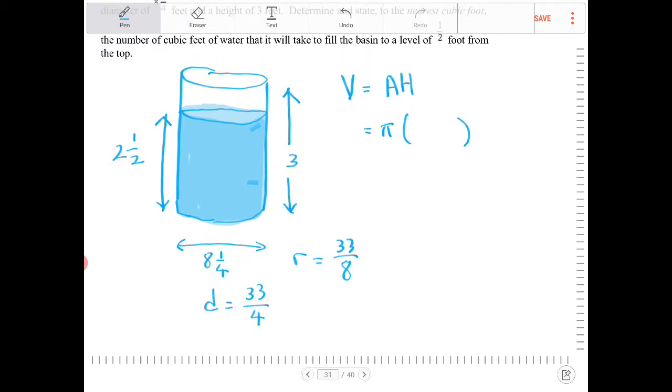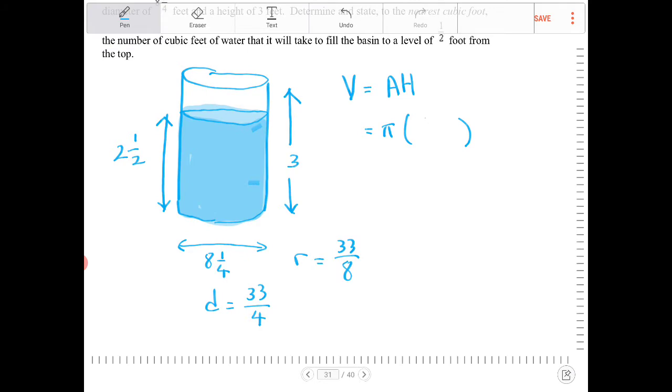Or you can just enter this in a calculator. It's all the same. But the radius is 33 eighths squared. And then the height is going to be two and a half. So that is five halves.